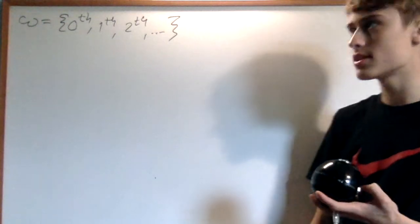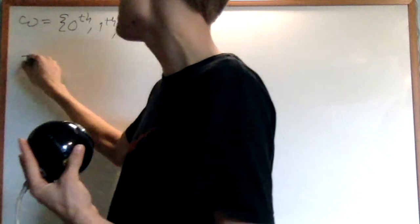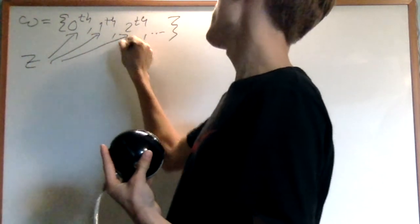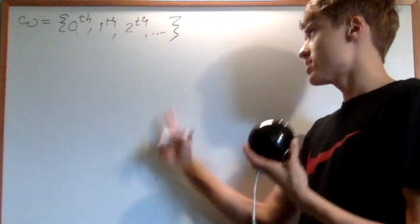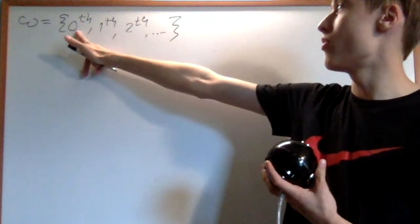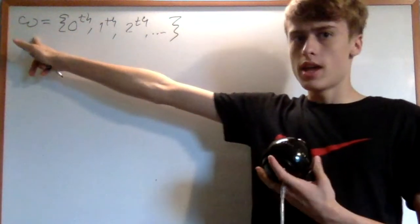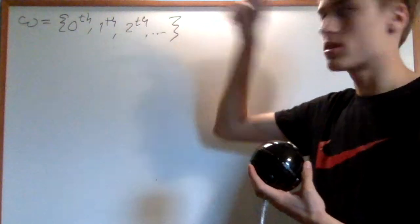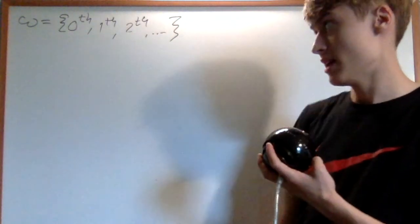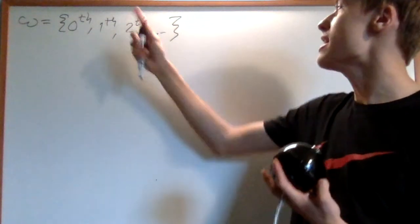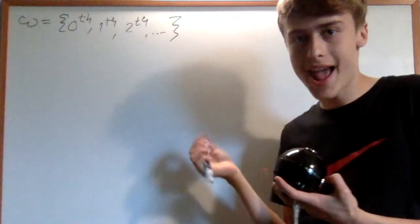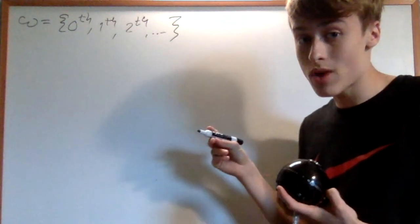More rigorously, you use the axiom of infinity to get Z, and then you use the axiom of replacement to replace all the elements using a function. Now, this set is infinite because ordinals are like the set of all the things before them. So omega is bigger than 0th, bigger than 1th, bigger than 2th, bigger than 3th — bigger than every single natural number, which are the finite values. So omega is the first infinity. Not only is it an infinite set, it's an infinite ordinal. Hopefully you can now see how this extends past the natural numbers and why this is an interesting concept.